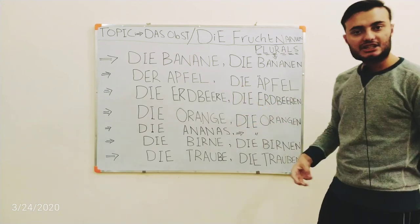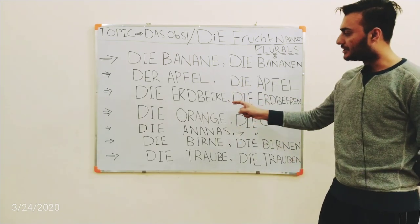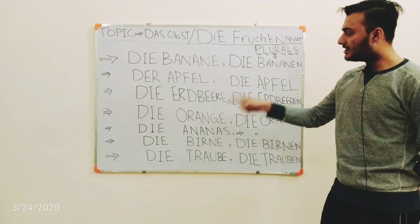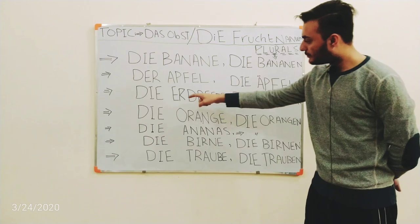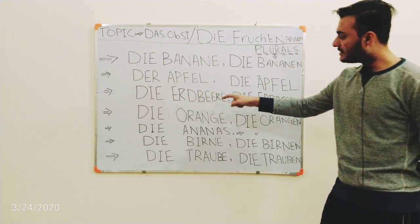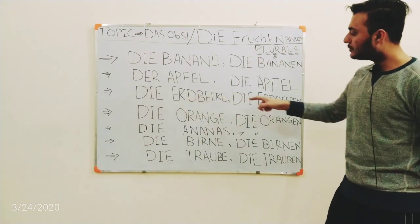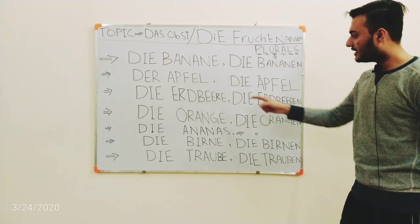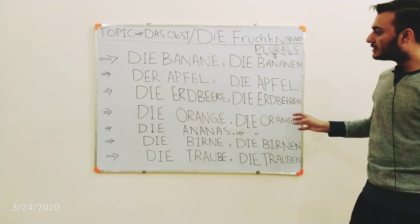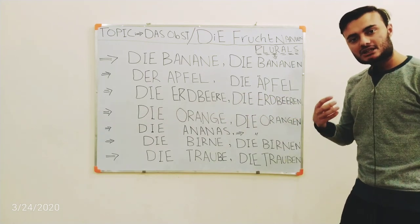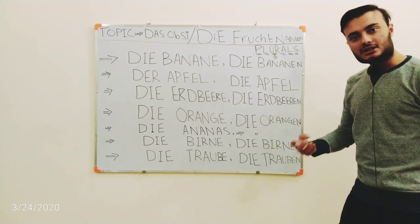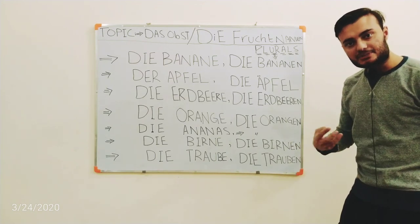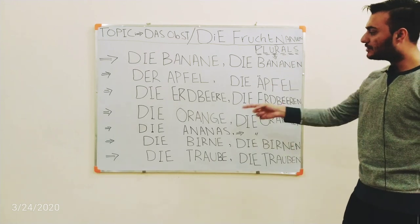Next one is 'die Erdbeere' — the strawberry. Strawberry is known as 'Erdbeere,' spelled E-E-R-D-B-E-E-R-E. Its plural will be 'die Erdbeeren' — just an 'n' is added. So 'die Erdbeere' is the strawberry and 'die Erdbeeren' is the strawberries.